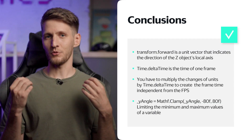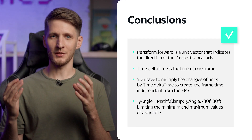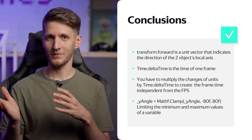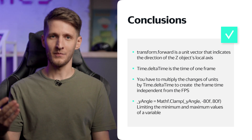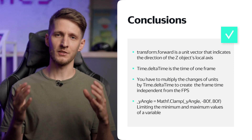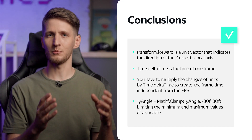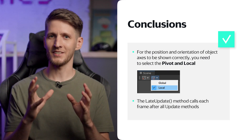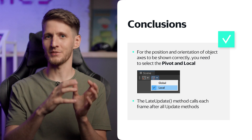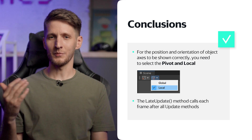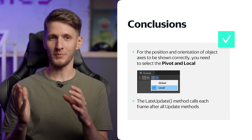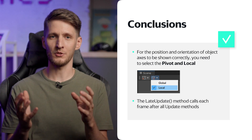To sum up: transform.forward is a unit vector indicating the direction of the local Z-axis of the object. Time.deltaTime is the time of one frame — if we change values in Update we must multiply by Time.deltaTime so it does not depend on frame rate. The Mathf.Clamp method limits a variable between a minimum and maximum value. Select Pivot and Local modes so the object axis is correctly displayed. LateUpdate is called every frame after all Update methods and is convenient for controlling the order of script calls.